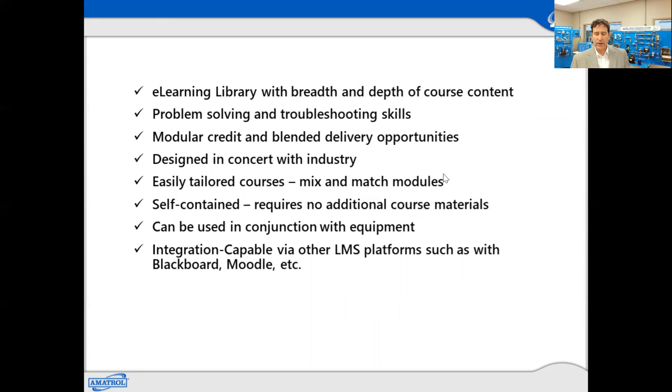In summary, some things to consider when implementing an effective e-learning course or software should include an e-learning provider and library with the breadth and depth of course content, problem-solving and troubleshooting skills, modular credit and blended delivery opportunities, designed in concert with industry to ensure the relevance, easily tailored courses where you can mix and match and create customized courses, self-contained, doesn't require any additional forced material, it can be used in conjunction with equipment or virtual, and integration capable via other LMS platforms such as Moodle or Blackboard.